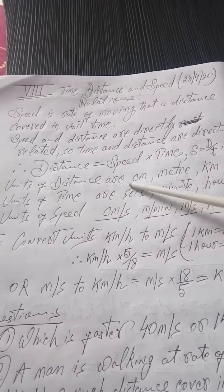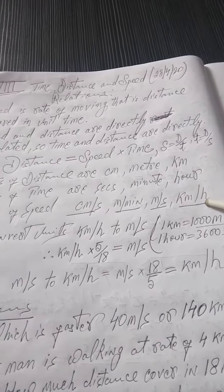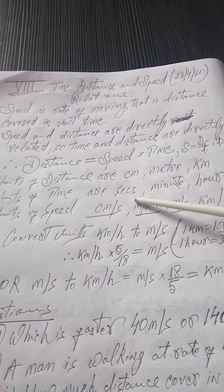Units of speed: centimeter per second, meter per minute, meter per second, kilometer per hour are the usual speeds, units that we use.